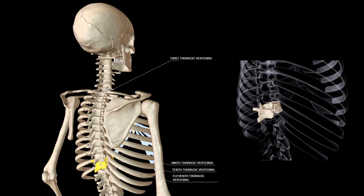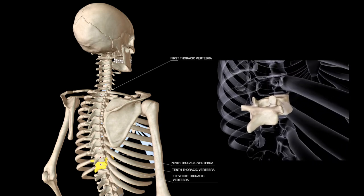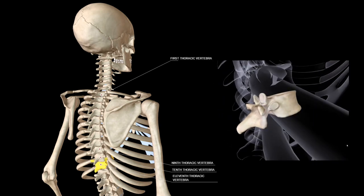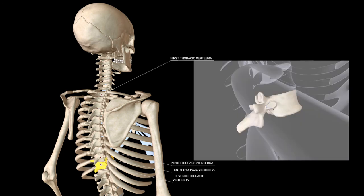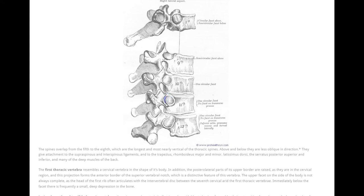The eleventh thoracic vertebra articulates with the head of the eleventh rib only. The circular facet is placed close to upper border of the body and extends backwards on lateral aspect of the pedicle. The transverse process is small but can be gripped between the finger and thumb. It is not marked by an articular facet.